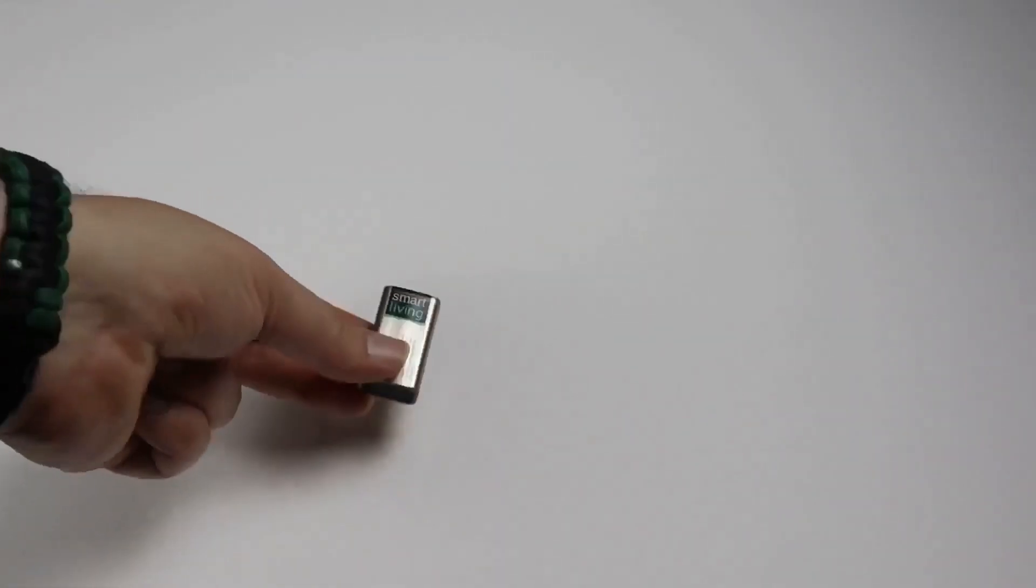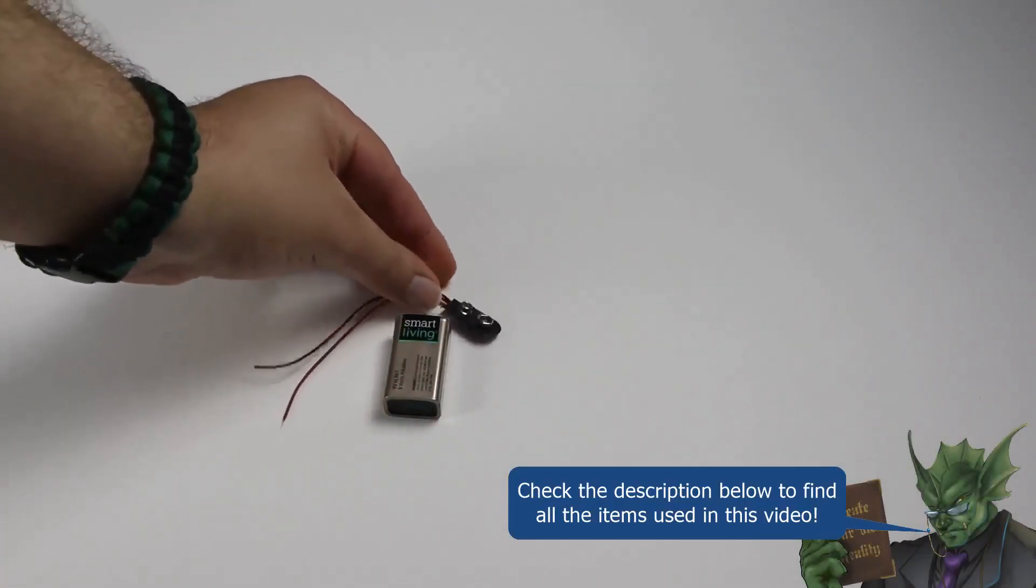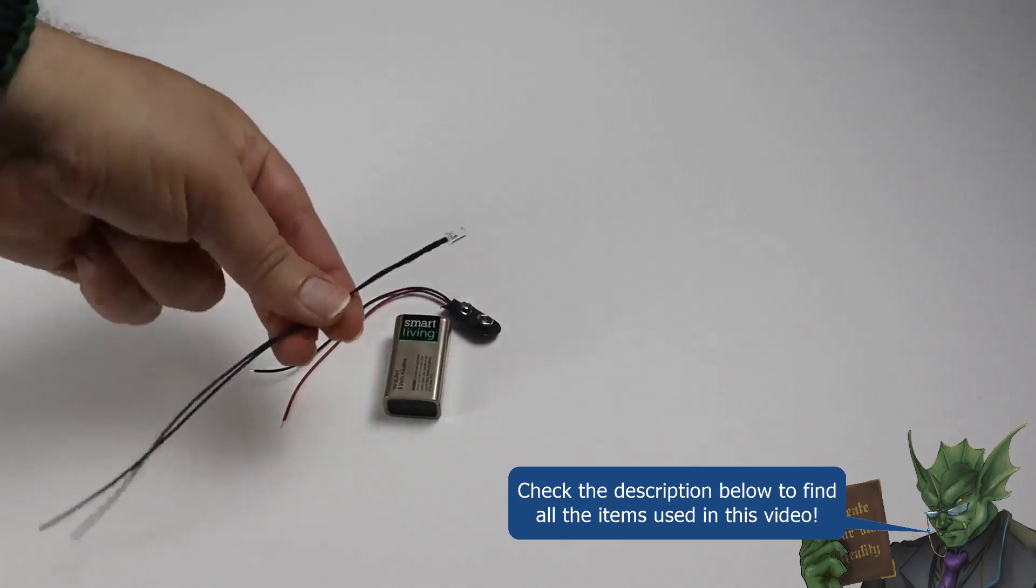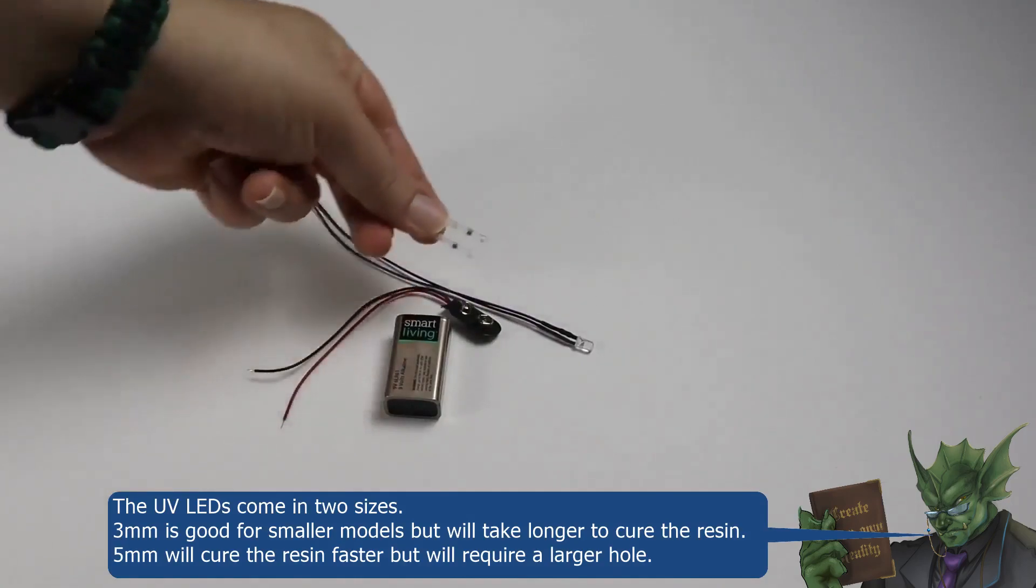So this process is really easy and it doesn't require any special tools. All you need is a 9 volt battery and a 9 volt battery connector, a 405 wavelength UV LED light. You'll need two heat shrink connectors.